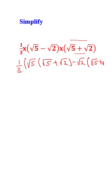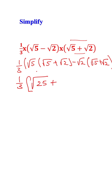We can multiply this out. This gives us one-third into: square root of 5 times square root of 5, which is the square root of 25; plus square root of 5 times square root of 2, which is the square root of 10.